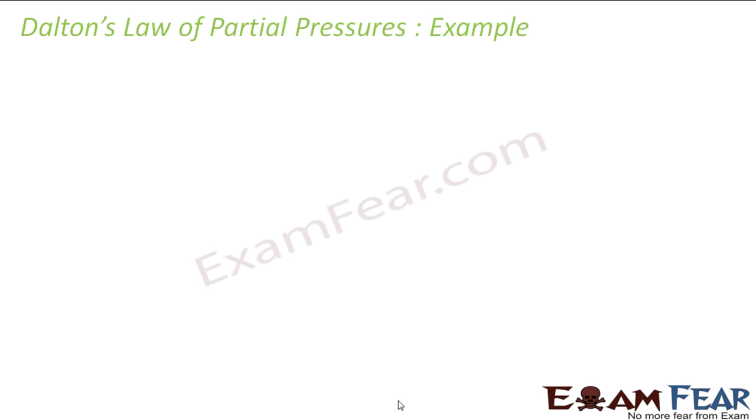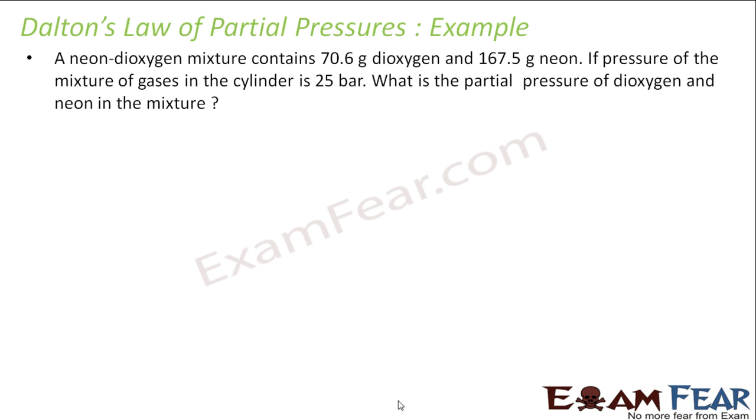Let us take some examples on the Dalton law of partial pressure. Here I have one container which has neon and oxygen—they do not react. And we have oxygen, we have 70.6 grams, and neon we have 167.5 grams. And the total pressure exerted by this gas is 25 bar. You have to find the partial pressure.